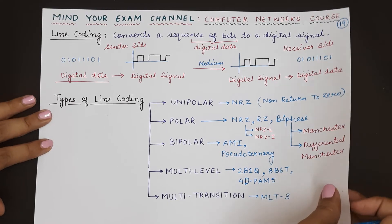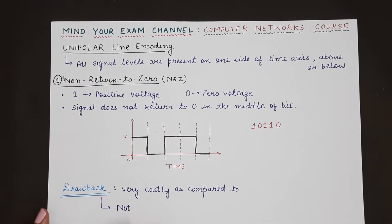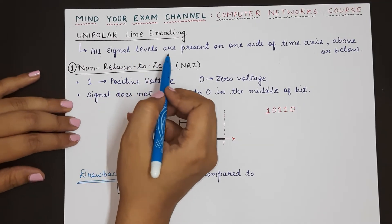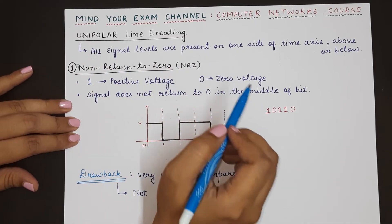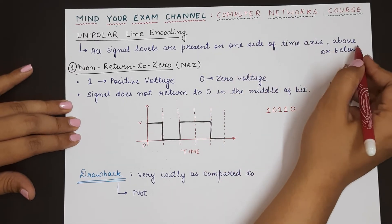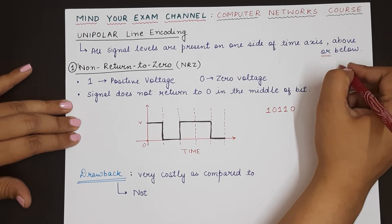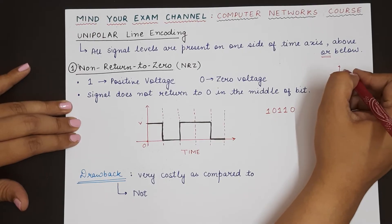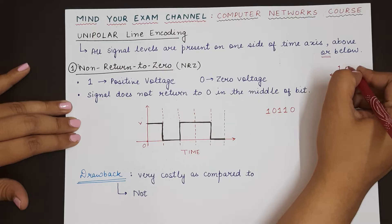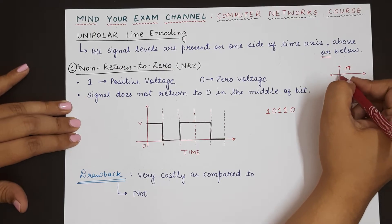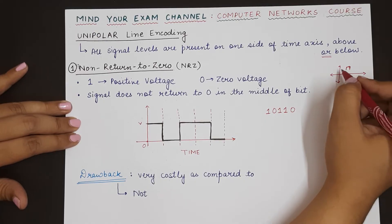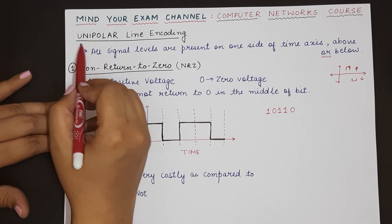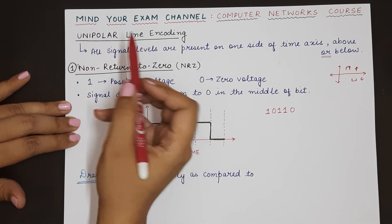Starting with unipolar line coding in today's lecture. Unipolar line coding ensures that whenever you create a digital signal, the levels in the digital signal are present only on one side of the time axis — either above or below. That is why we say it is unipolar: 'uni' means one, 'polar' means side.